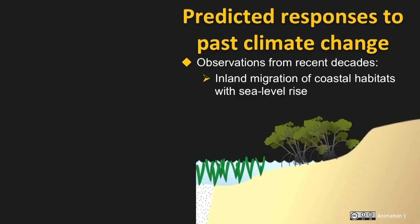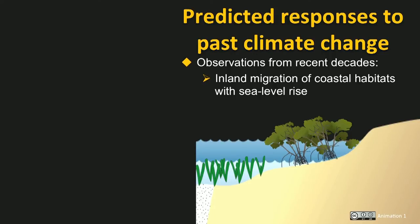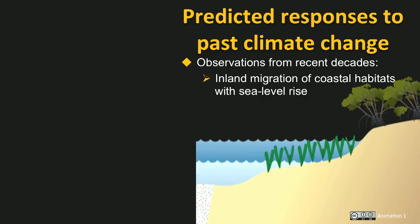Here's a small animation of how we might expect seagrasses to respond to increases in sea level. Currently, this slide shows mangroves upslope and seagrasses in the subtidal area of this landscape. As sea level rises, the mangroves die and move upstream, as do the seagrasses. In this way we may see quite large changes in the distribution of seagrasses with sea level rise.